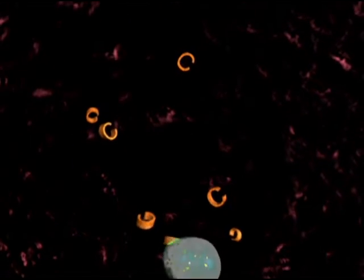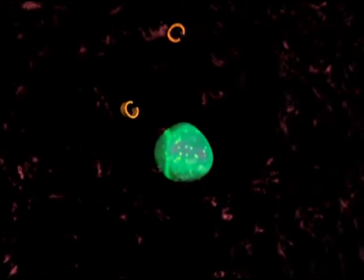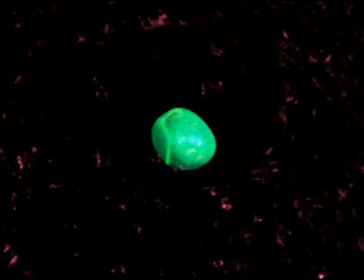These activated B cells move back into the surrounding tissue and secrete immunoglobulins, the immune system's first line of defense.